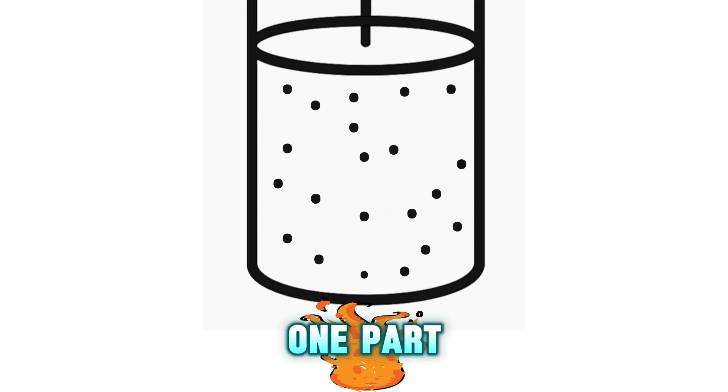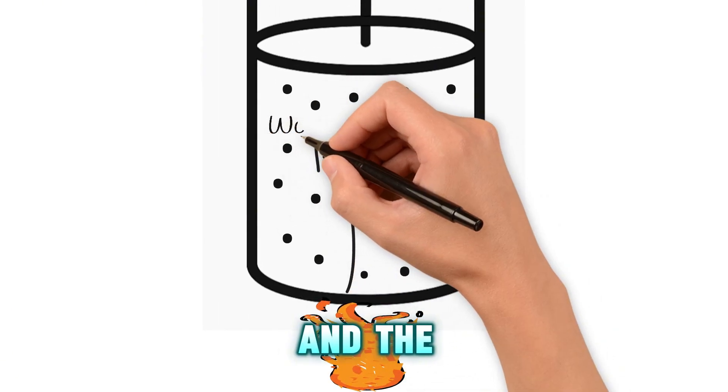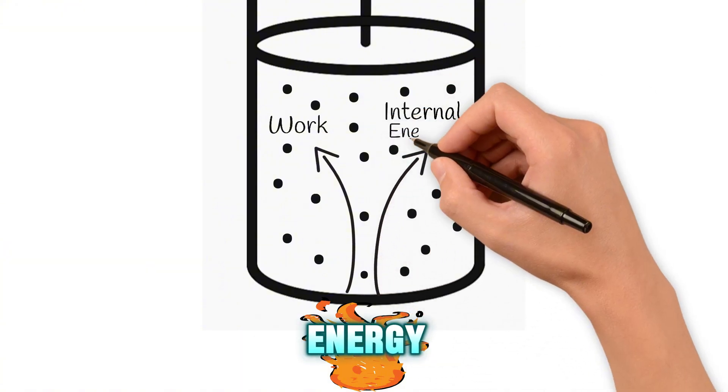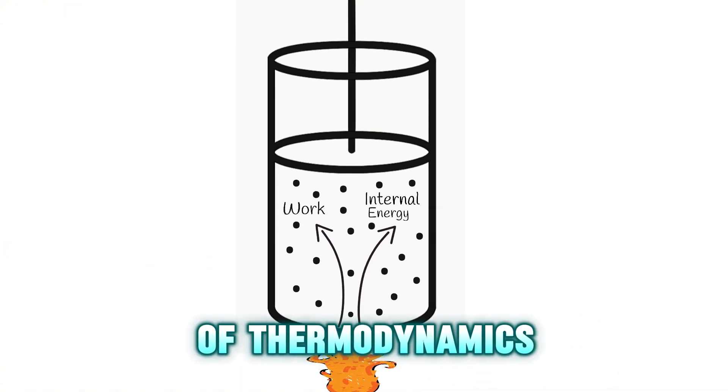So the heat we add is divided into two parts. One part is used to do work, and the other part stays in the system as internal energy. This is what the first law of thermodynamics tells us.